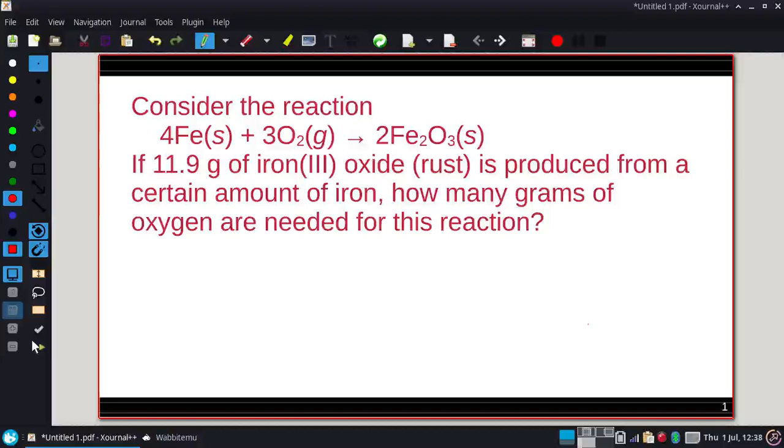Consider the reaction of iron and oxygen forming iron oxide. If 11.9 grams of iron(III) oxide is produced from a certain amount of iron, how many grams of oxygen are needed for this reaction?